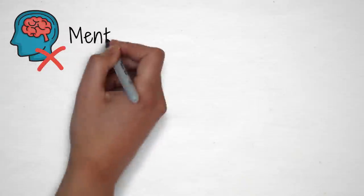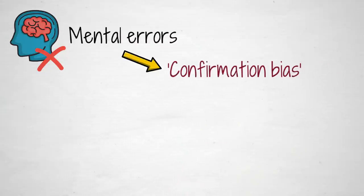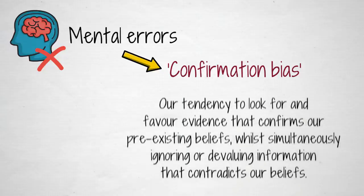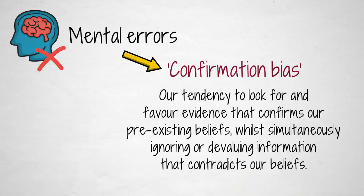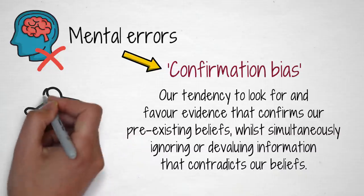There are several mental errors that affect our decision-making, but by far the most powerful is confirmation bias. Confirmation bias refers to our tendency to look for and favor evidence that confirms our pre-existing beliefs, whilst simultaneously ignoring or devaluing information that contradicts our beliefs.